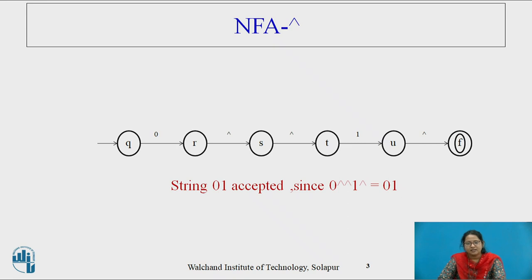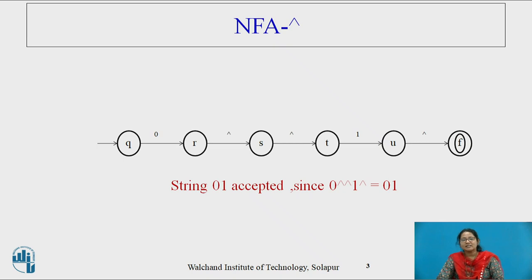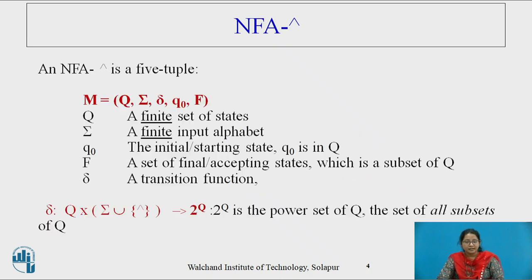The machine accepts the string 0,1. But in between, there is movement from one state to another without processing anything — by processing an empty string. That is NFA with a null transition.